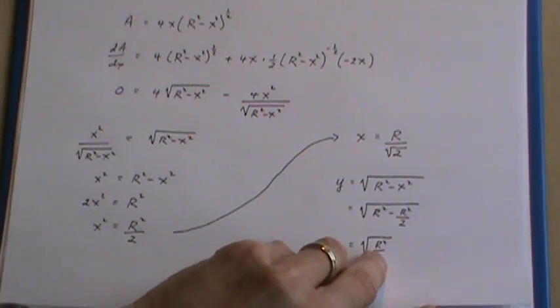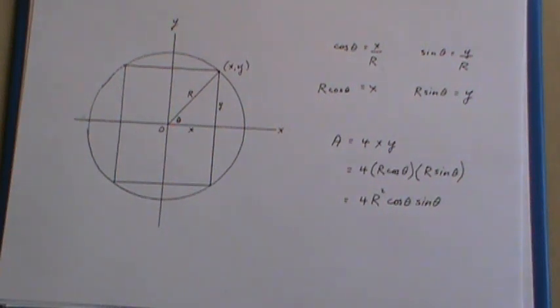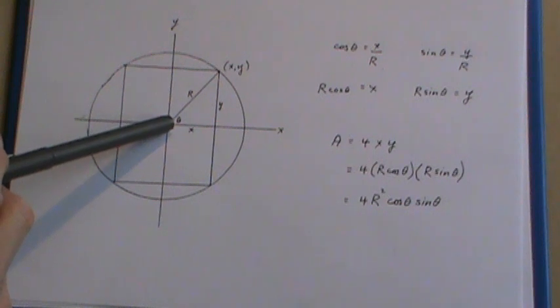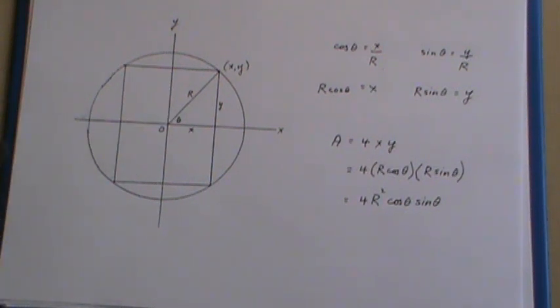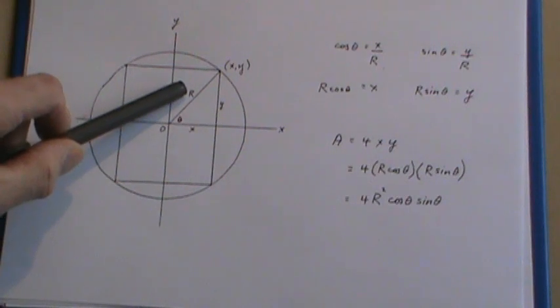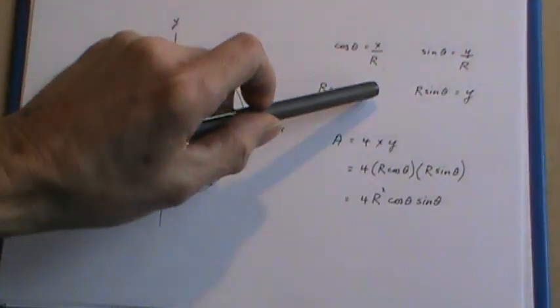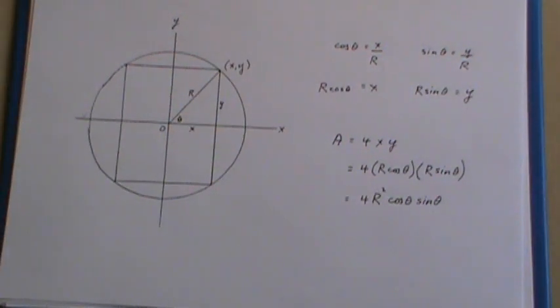Now if you want to do this in a somewhat different way, let's go back to the original diagram and put the symbol θ in here and I'm going to do this using trigonometry. The cos of θ is x/R and the sine is y/R. So if I cross multiply I have substitutions for x and y.